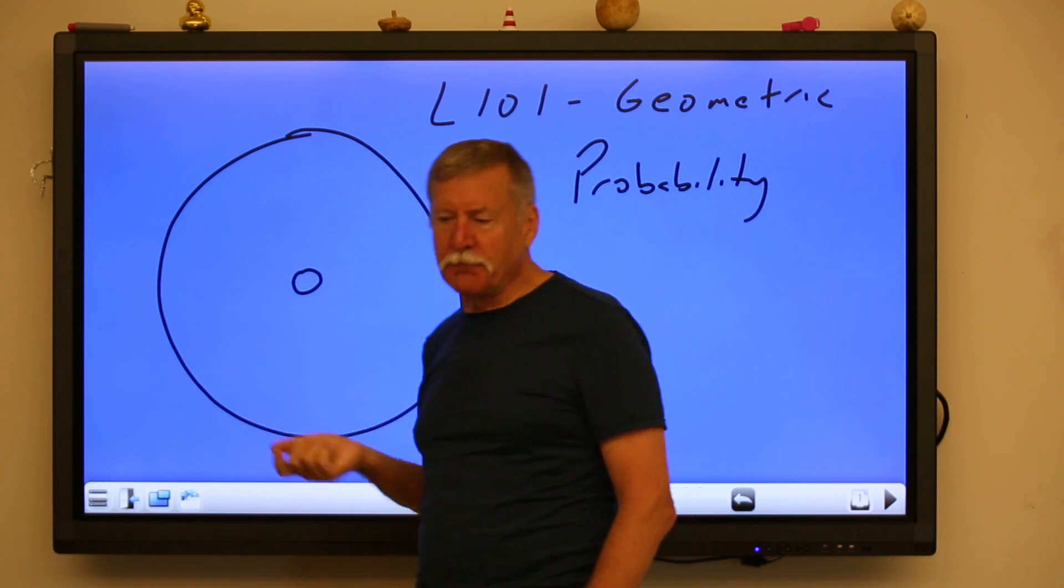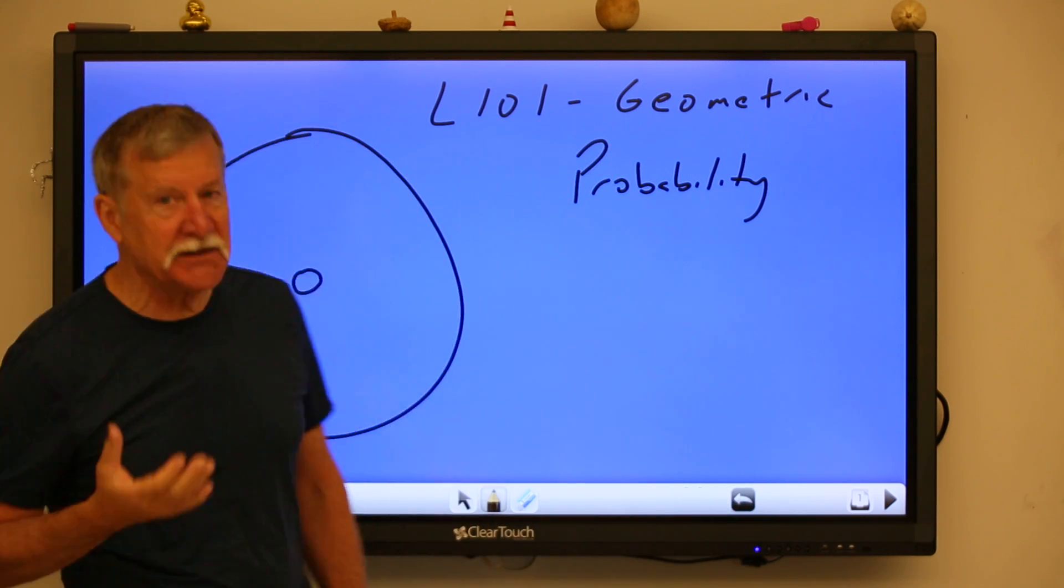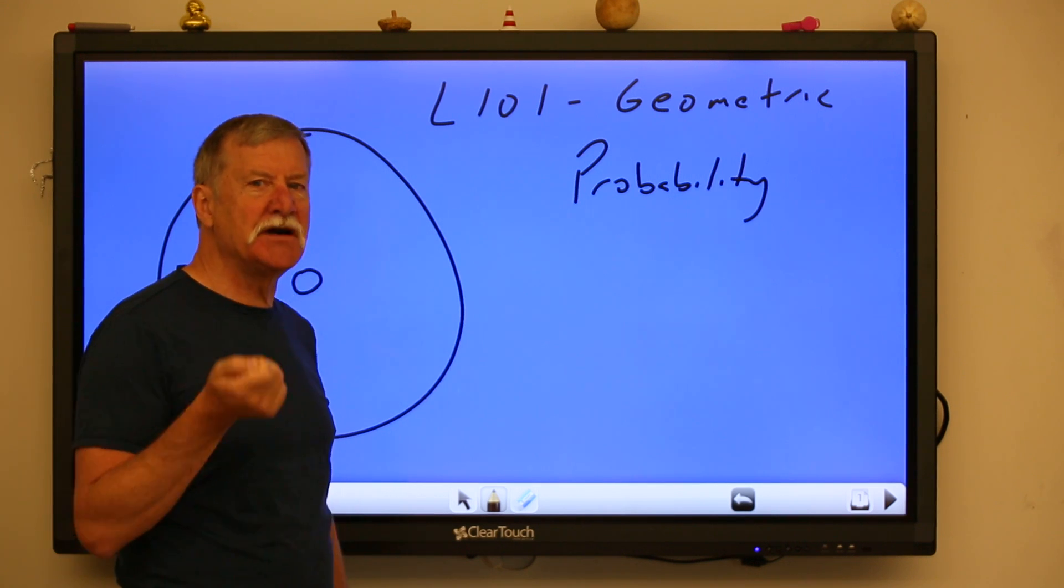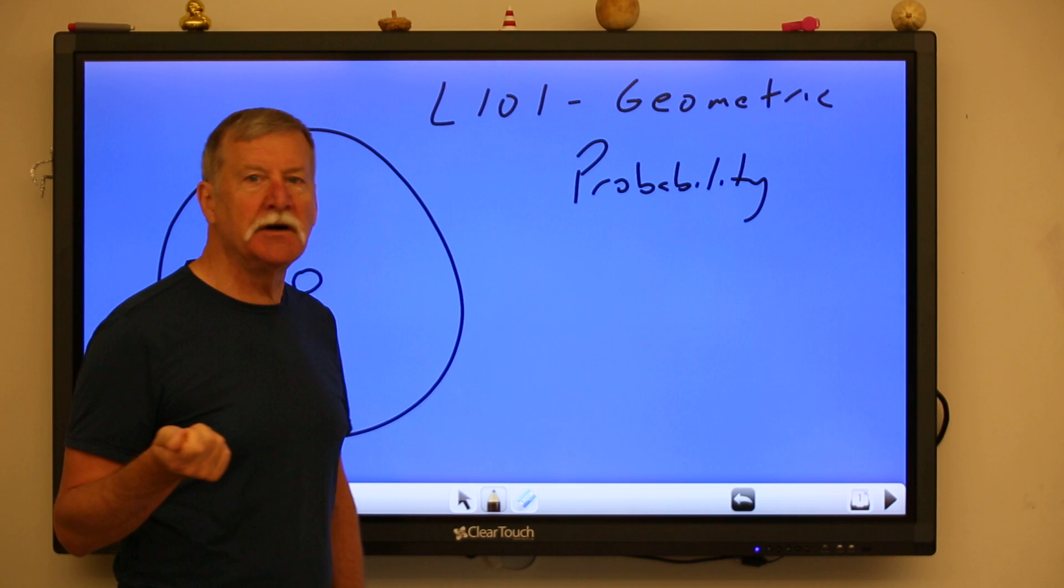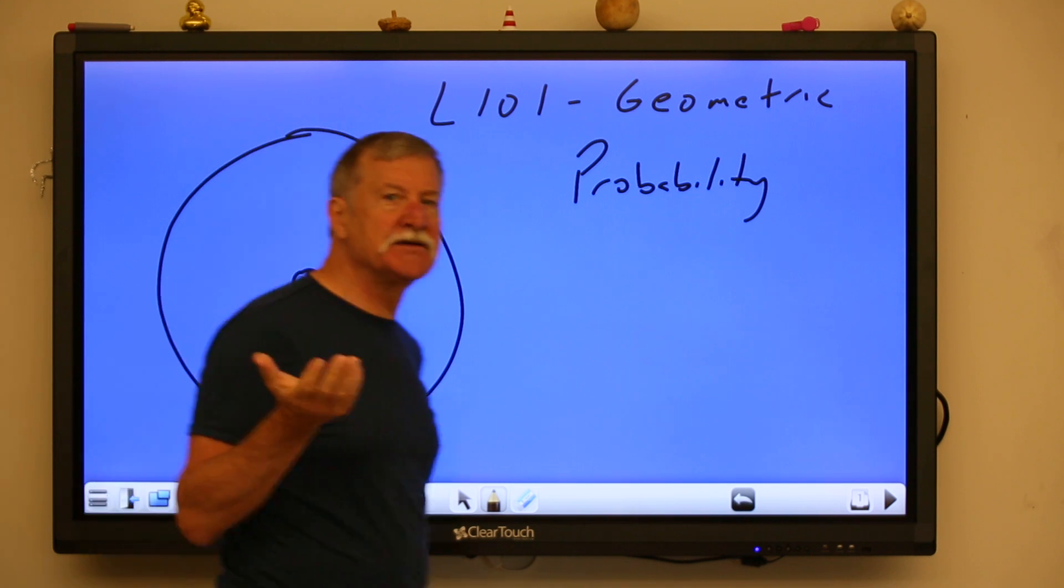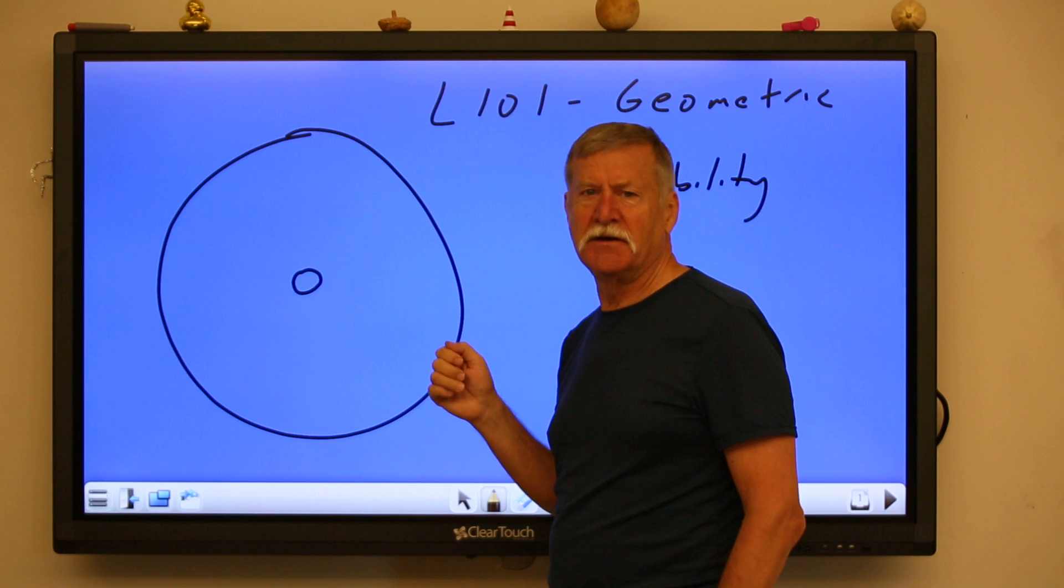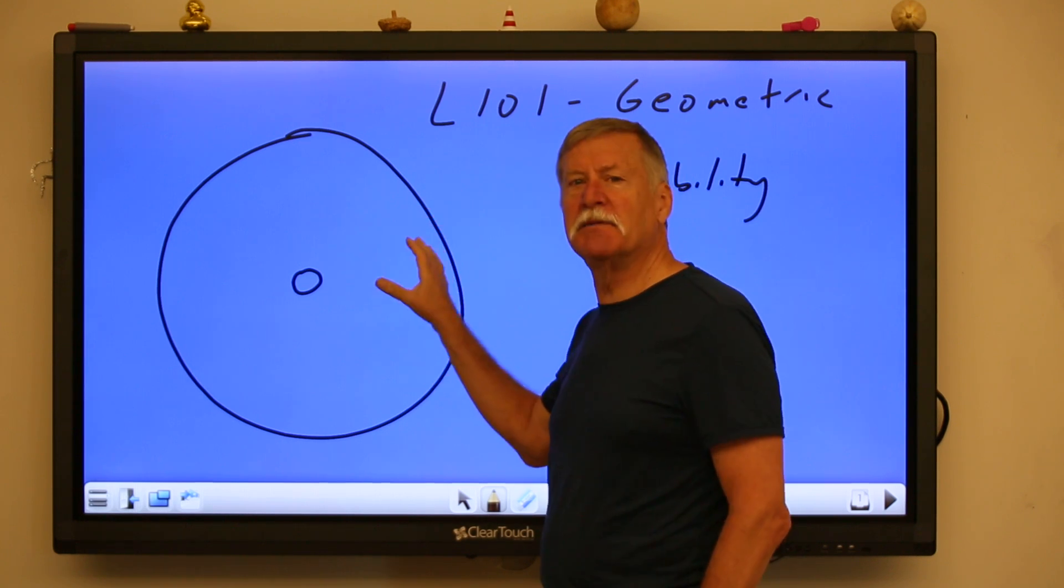Yeah and that all works to a point but math gives us a way to quantify that, to put numbers to it, to be able to judge this number versus that number is a better way of doing things than saying kind of bad versus almost good. So that's what we're talking about here.